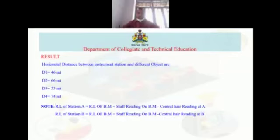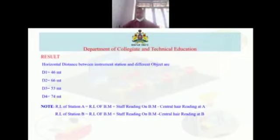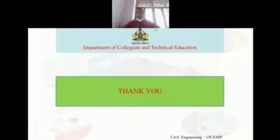You can also find the RL of any particular station using the formula: RL of benchmark + staff reading on benchmark − central hair reading at that station. This applies to stations A, B, C, D, E, and so on. Thank you.